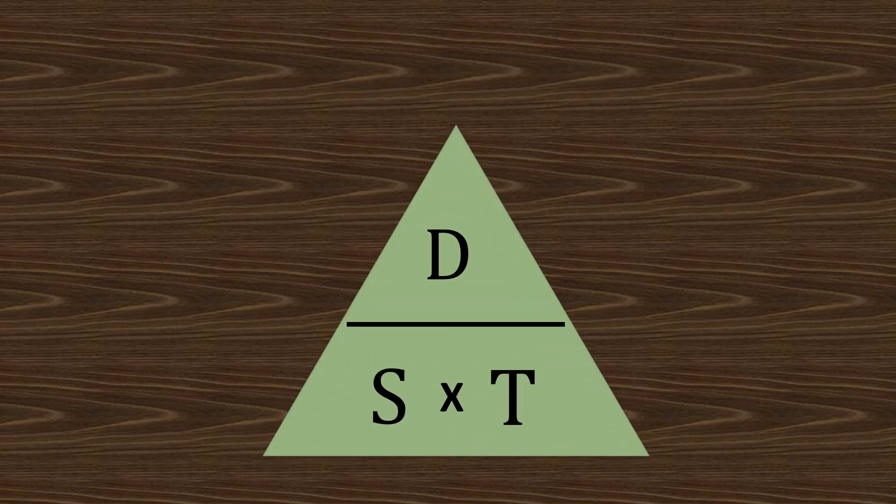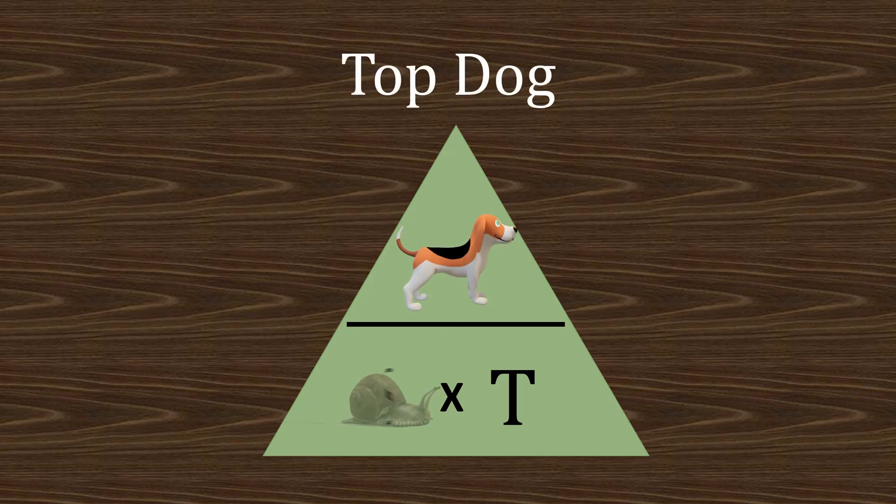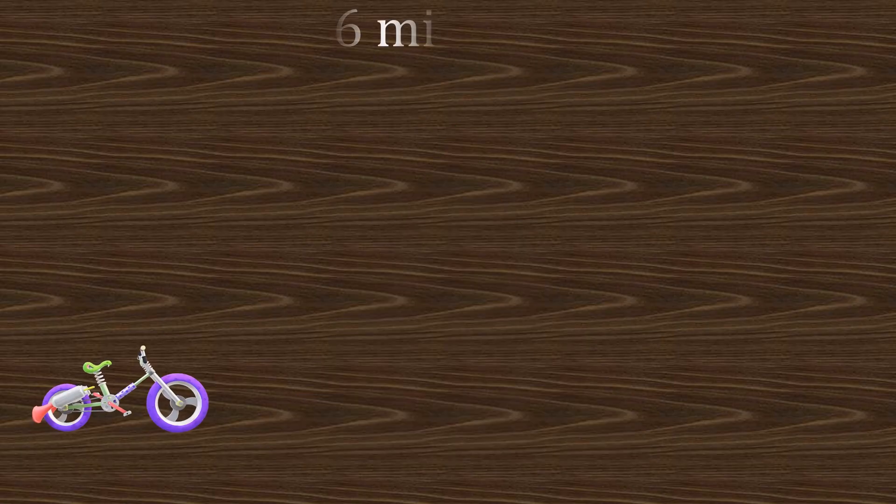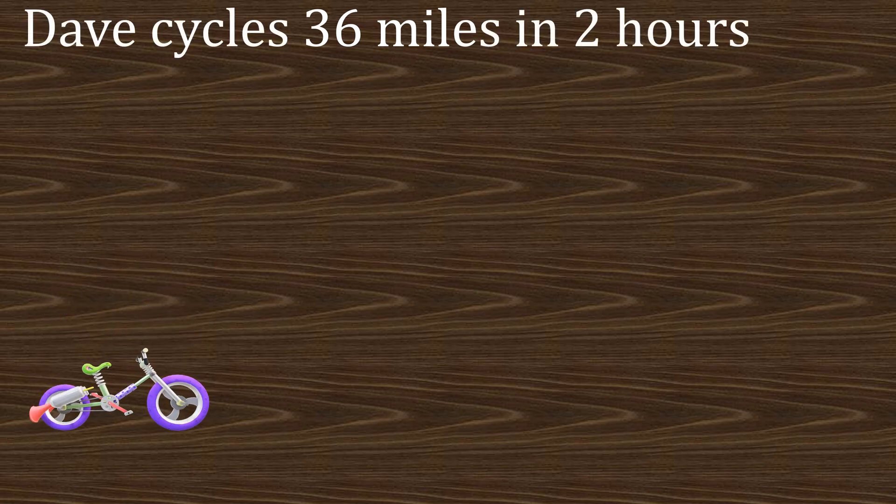We need a D on top, D for dog is going to be the top dog, and that's because the dog is faster than the snail and the tortoise. Top dog. So Dave cycles 36 miles in two hours. Question: